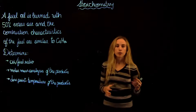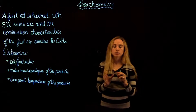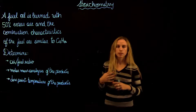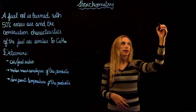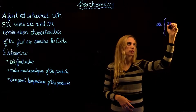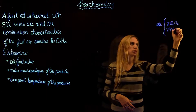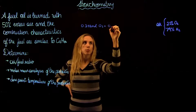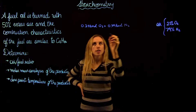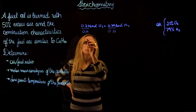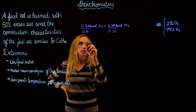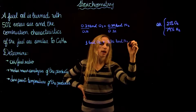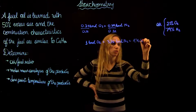A combustion process is a chemical reaction where fuel is oxidized, most of the time by air, and is going to release a large amount of energy. Air is composed of oxygen, nitrogen, argon and other gases, but to make it simple for the analysis, we're going to say that air is composed of 21% oxygen and 79% nitrogen. This gives us 0.21 kilomol of O2 plus 0.79 kilomol of N2, and dividing by 0.21, for each kilomol of oxygen we need 3.76 kilomol of nitrogen, giving 4.76 kilomol of air total.